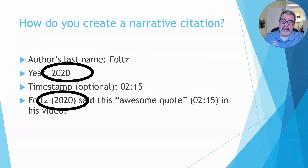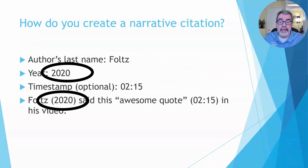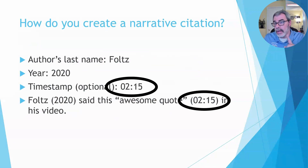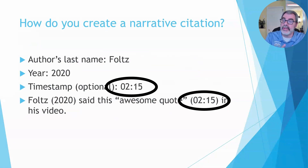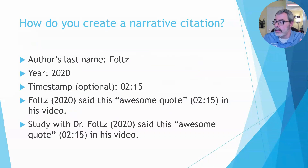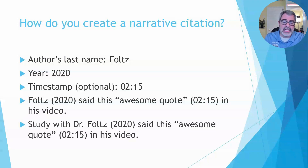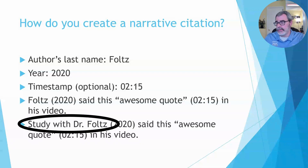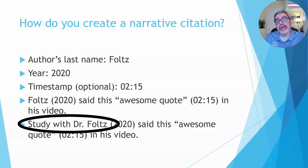Notice where the year goes — the year doesn't go after the piece of evidence. Instead, the year is tethered right next to the last name, or tethered to the username. And then if you do have a timestamp, which you should, put that timestamp right after the piece of evidence. Notice how the timestamp is not within the quotation marks at all. If you don't have the real name and only have the username, it's going to look exactly the same. Don't put the username in italics, bold, underlined, or quotation marks — treat it as if it's the real name.